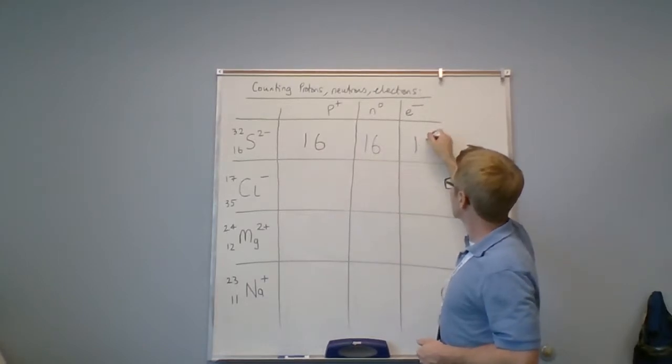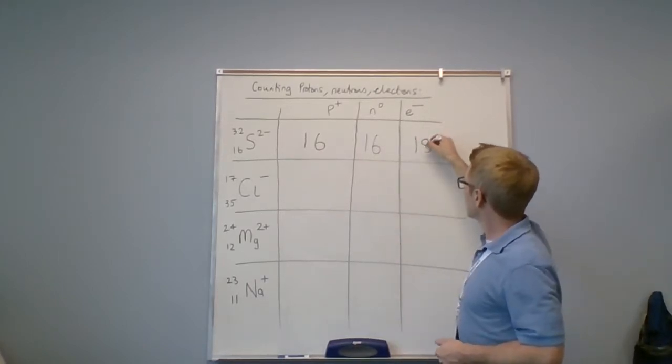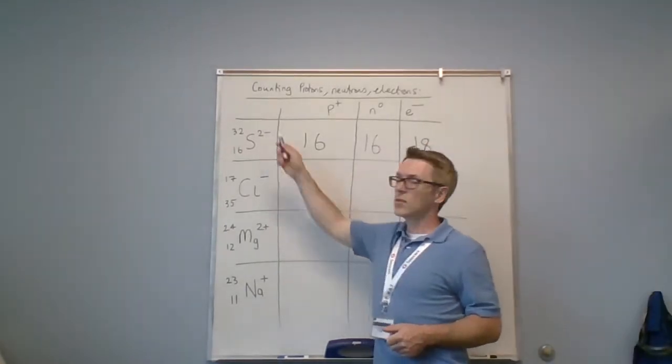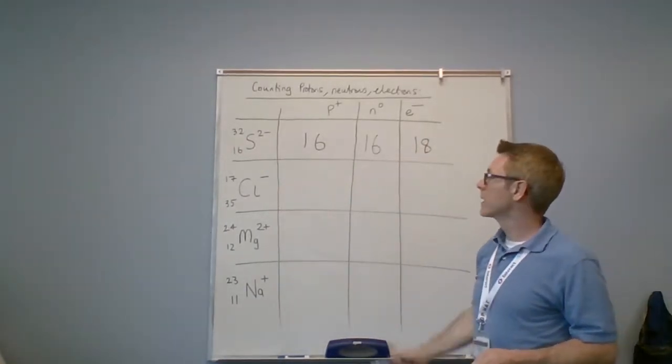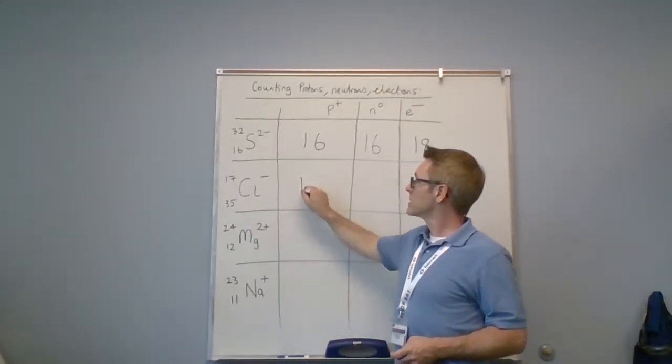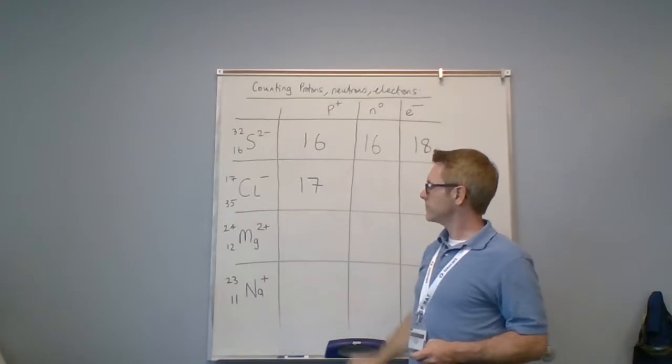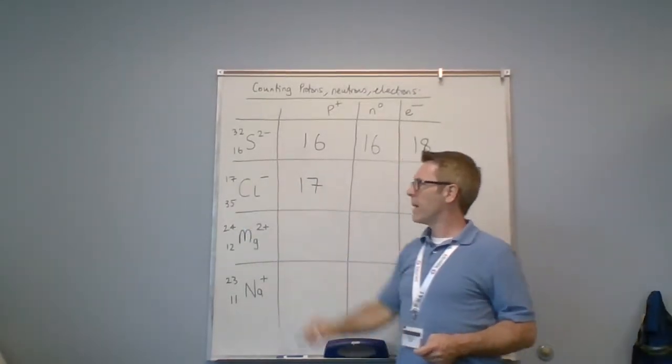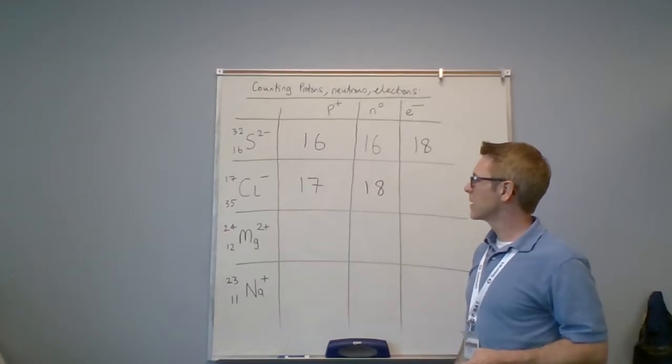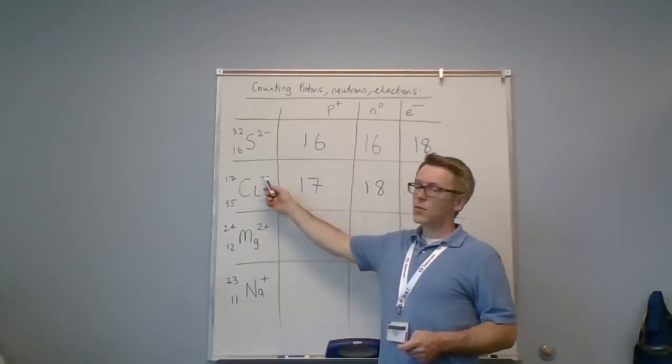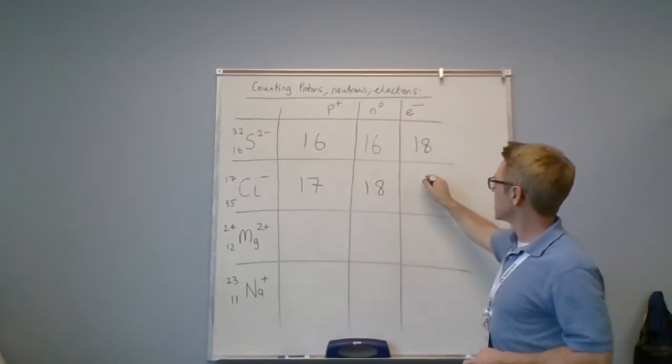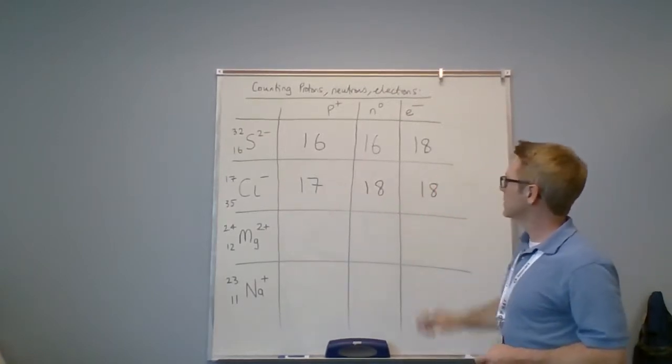17 is the smaller of the two numbers, so I have 17 protons. 35 minus 17 is going to give me 18 neutrons. I have one residual charge, so I have my original 17 plus an extra one—18 electrons.